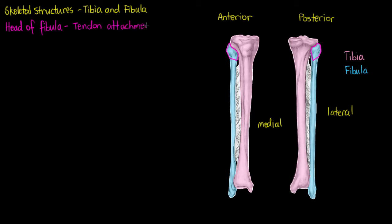It will articulate and form a joint with our tibia, and it's also going to be a point of tendon attachment for muscle — so articulation point and tendon attachment.